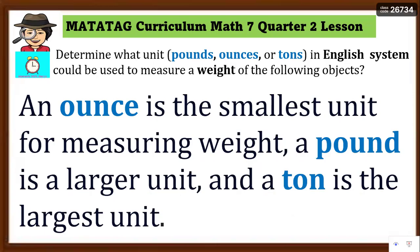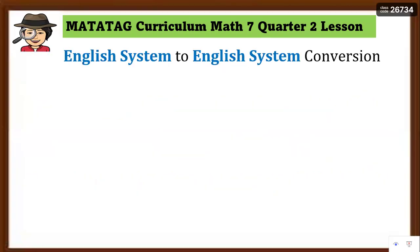When the object being weighed is light, we use ounces — like a spoon or an apple. Pounds are used for average-weight objects, like a cat, a person's weight, or a table. A ton is the largest unit, used for very heavy things like vehicles. You often see tons used for large vehicles.